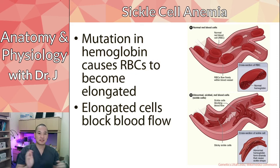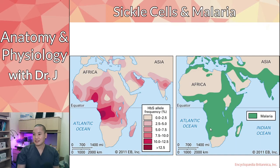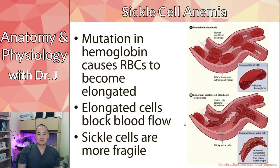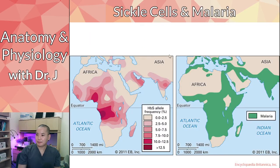Sickle cells flow less efficiently and are more prone to breaking up - they're more fragile. Hemolysis causes all those cell contents to rupture as well. This is why sickle cell causes anemia: because of this fragility, the red blood cells are being broken up, and you don't have hemoglobin being transported efficiently in your blood, thereby causing anemia.